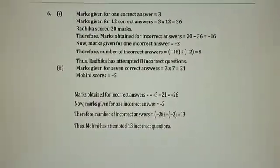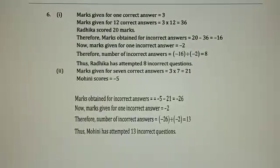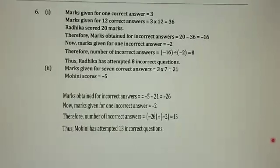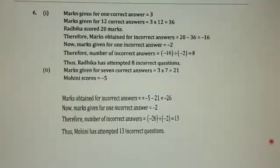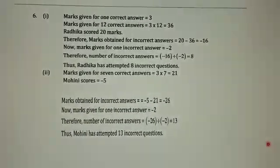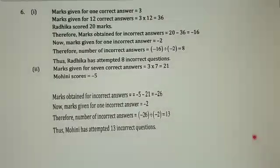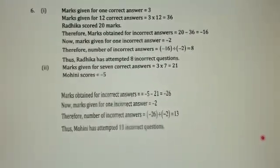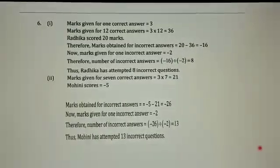Question number 6. In a class test, plus 3 marks are given for every correct answer and minus 2 marks are given for every incorrect answer, and no marks for not attempting any question. Radhika scores 20 marks. If she has got 12 correct answers, how many questions has she attempted incorrectly?